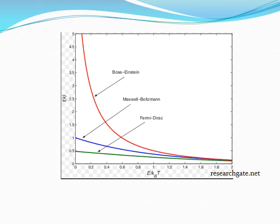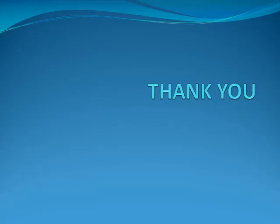In this slide, we are showing a graph representing Bose-Einstein, Maxwell-Boltzmann, and Fermi-Dirac statistics. The red curve is for Bose-Einstein, blue represents Maxwell-Boltzmann, and green represents Fermi-Dirac. Here I conclude my lecture on Bose-Einstein statistics. Thanks for listening. Thank you very much.